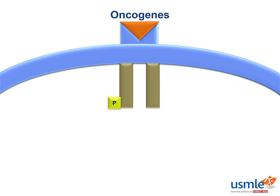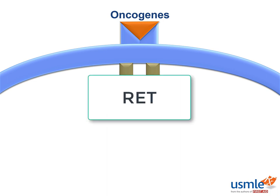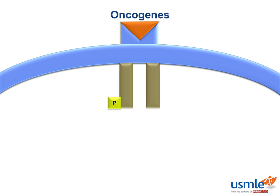The RET proto-oncogene mutation causes two high-yield syndromes: MEN2A and MEN2B. MEN2A involves parathyroid cancers, pheochromocytoma, and medullary thyroid cancer. MEN2B involves pheochromocytoma, medullary thyroid cancer, and mucosal ganglioneuromas or marfanoid habitus.